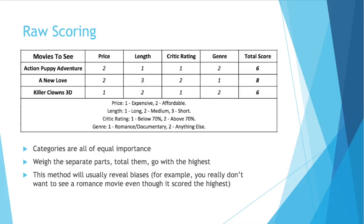If you start with this method, it typically reveals biases. Say you do this and the key is accurate to who you are, but even if A New Love wins, you're going to say, I'm not going to go see that romance movie — it's not worth it. That indicates something is off with your scoring system. So let's try a ranked approach and a weighted approach.